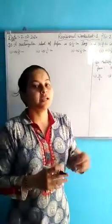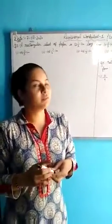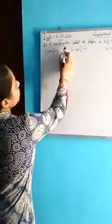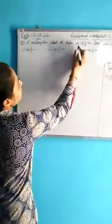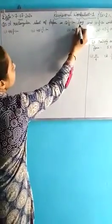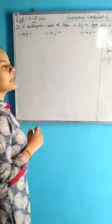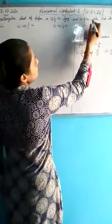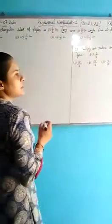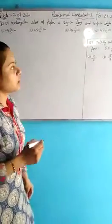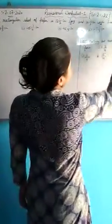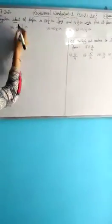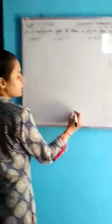Now students, let's start. It's question number three of the same worksheet, worksheet number one. That is a rectangular sheet of paper that is 12 and 1/2 centimeters long — that means it is the length of the sheet of paper — and 10 and 2/3 centimeters wide — that means that is the breadth or width of the sheet. Find its perimeter.